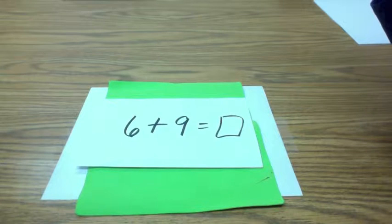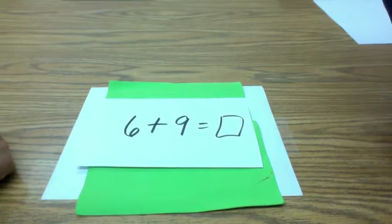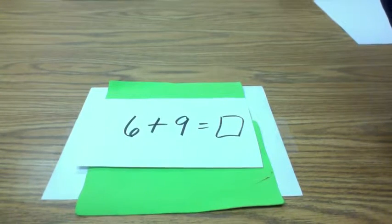Well, you could imagine the 6 just as a 5 and 1, move the 1 down, and you see 5 and 10. 5 and 10 would make? 15.